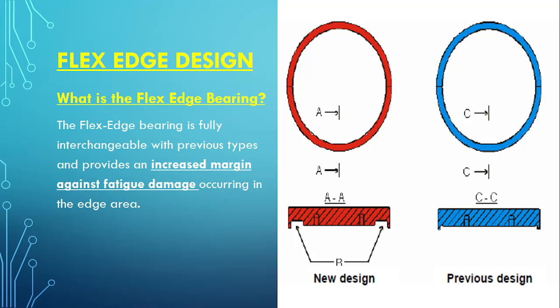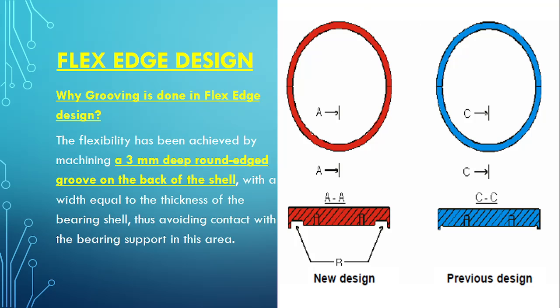The main purpose of this flex edge design is to increase margin against the fatigue damage. As you know, the load in the main bearings are cyclic in nature, so it is subjected to fatigue. In order to reduce the fatigue damage occurring in the edge area, we are reducing it by allowing this bearing to take more load. This grooving is achieved by machining a 3 mm deep groove on the back of the shell. This width is equal to the thickness of the bearing shell, and the depth of the groove is 3 mm. This is how this grooving is done.